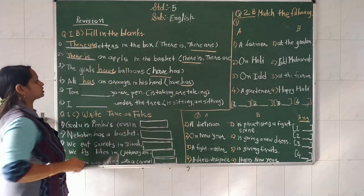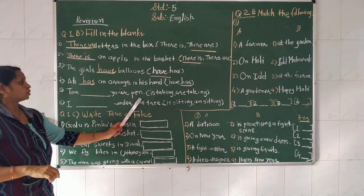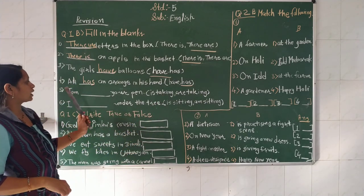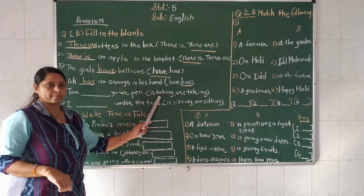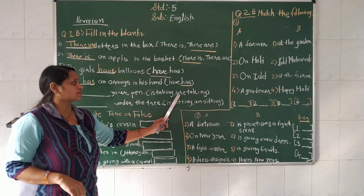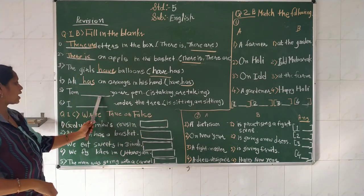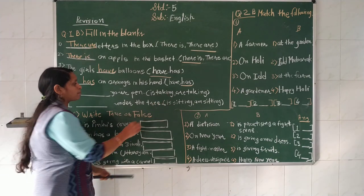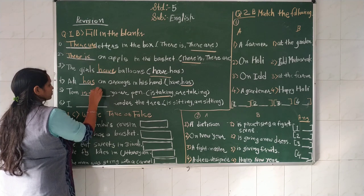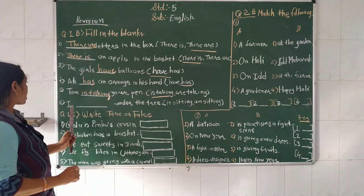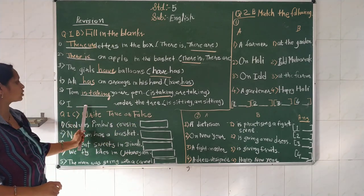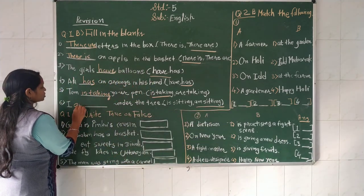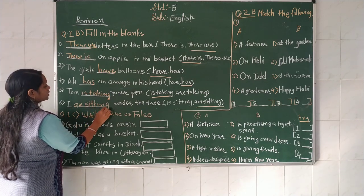Ali is eating an orange in her garden. 'An' આવે છે, કારણ કે Orange 'O' (vowel) થી શરૂ થાય છે. વચ્ચેના વાક્યમાં 'an' આવે. Tom blank - Tom are - 'are' આવે, 'am' નહીં. Tom એ I નહીં, Tom B.O. (3rd person) છે.